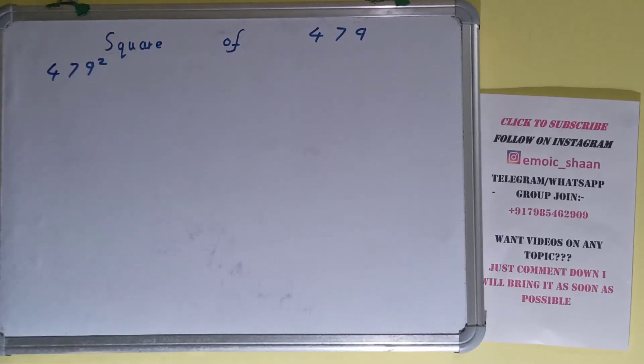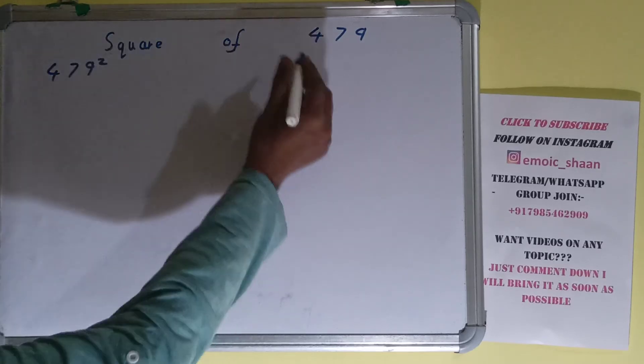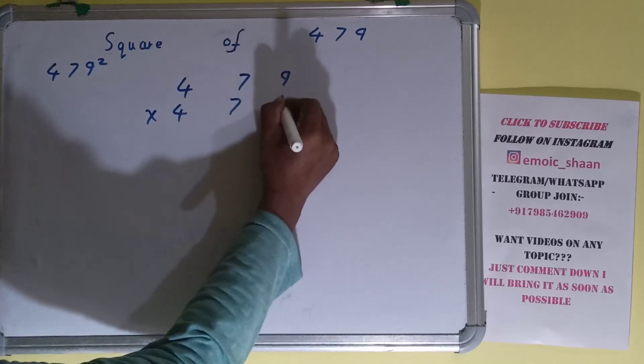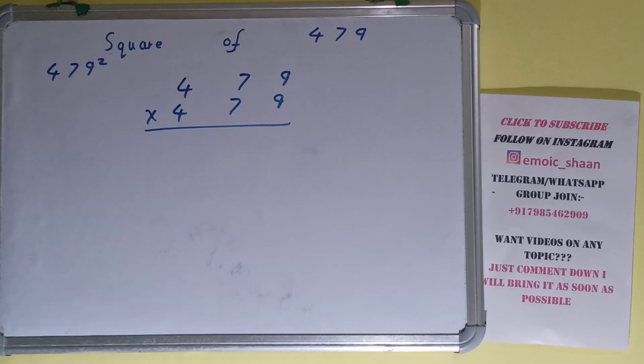Square basically means multiplying the number by itself. To find the square of 479, we multiply 479 by 479 using normal multiplication. Let's start: 9×9=81, 8 carry. 7×9=63 plus 8